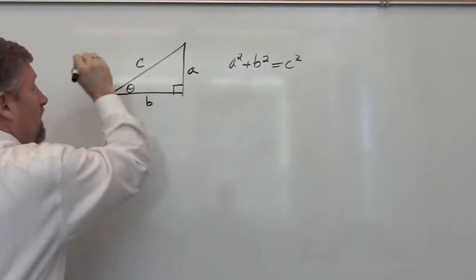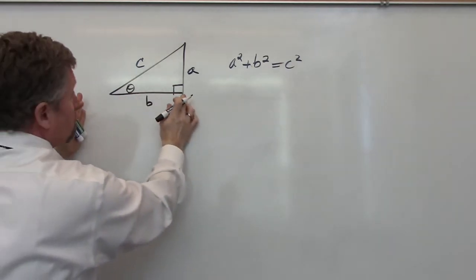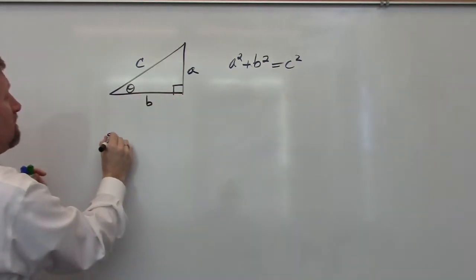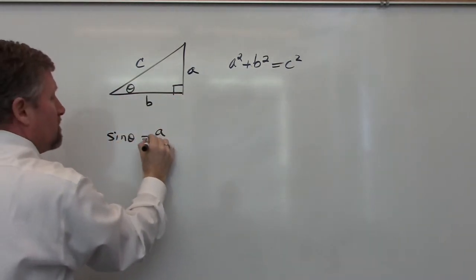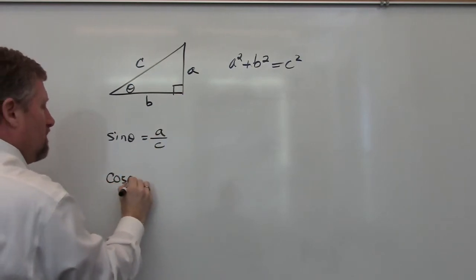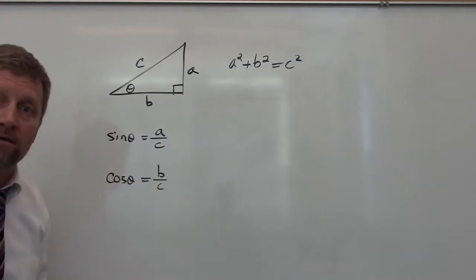We also know that if we call that angle theta, we have some trigonometric ratios that can come out of this. Does everyone agree that the sine of theta is A over C and the cosine of theta is B over C?